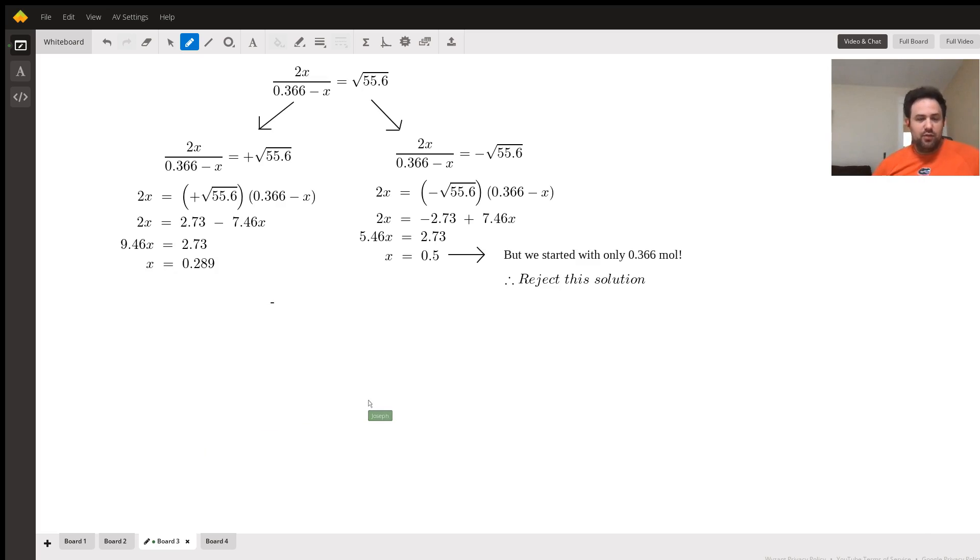On the next board we kind of explore that. What we want to do is set up an equation for both situations: one where it's a positive square root of 55.6 and one where it's negative. That's what I've gone ahead and done here.